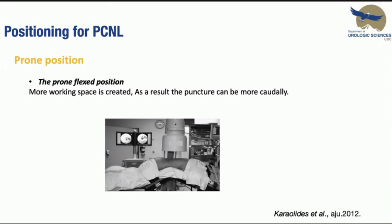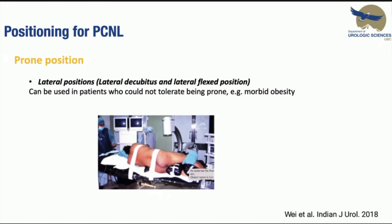Airway pressure increases and cardiac index decreases in the prone-flex position. The lateral position can be used in patients who cannot tolerate prone, such as those with morbid obesity. The main disadvantage is an unusual fluoroscopic view of the kidney, which can be obscured by the underlying spine, making accurate puncture of the selected calyx difficult, especially using the bullseye technique. Ultrasound-guided access or triangulation technique may be used as alternatives.